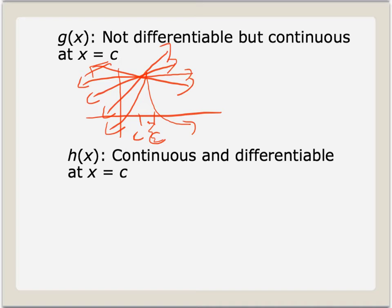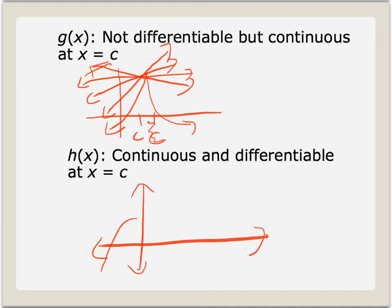For h of x — continuous and differentiable at x equals c — that's just about any function you've experienced before calculus. I'm going to draw a cubic function, which is both continuous and differentiable. Remember, as long as a function becomes a line when you zoom in on it, it's differentiable. This point would become a line if you zoomed in enough, so it's continuous and differentiable.